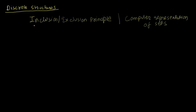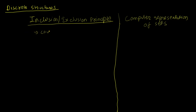The inclusion-exclusion principle is a counting technique that helps us estimate the number of elements that belong to the union of sets — two sets, three sets, any number of sets. Consider the typical example of A union B. We want to take everything in A and everything in B, but if there is any intersection between A and B, we are counting that twice.